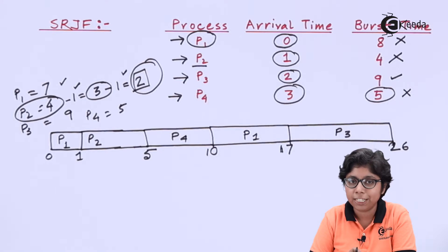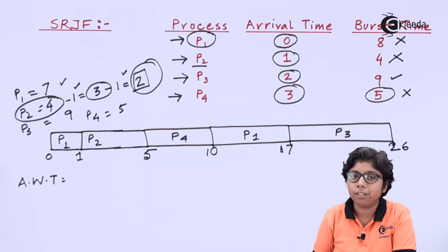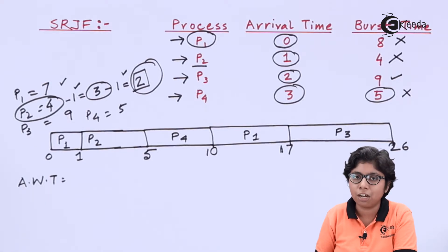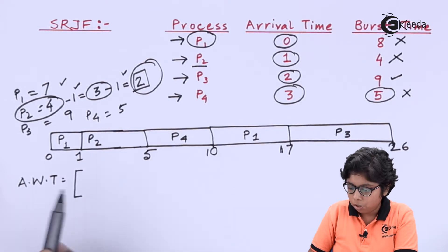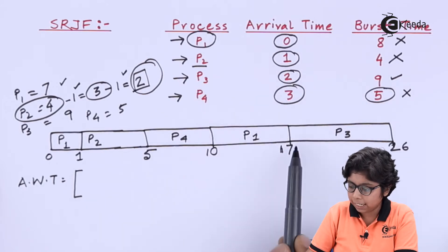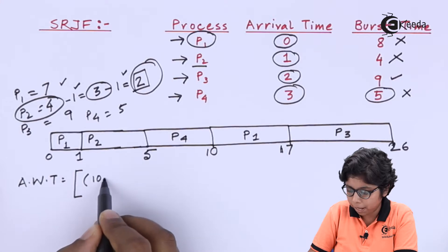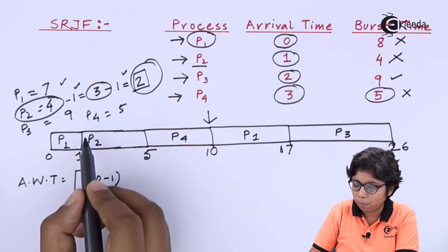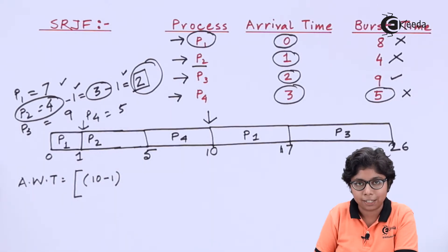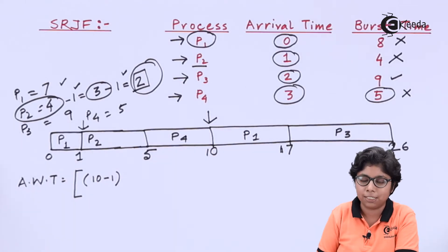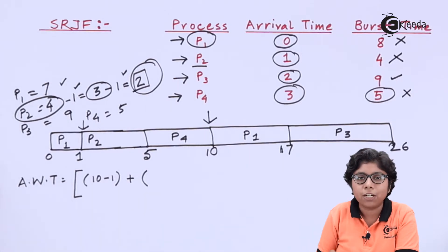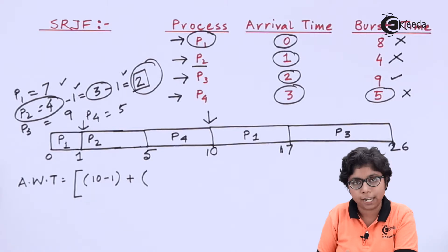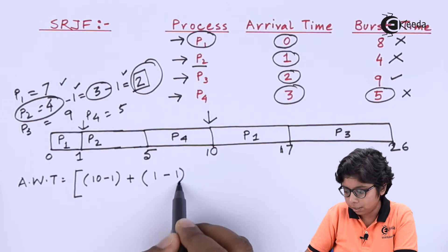We now calculate the average waiting time for each process. For P1, it first executes 1ms, then resumes at 10ms, so the waiting time is 10 minus 1, which is 9ms. For P2, it arrived at 1ms and started execution immediately, so the waiting time is 1 minus 1, which is 0ms.